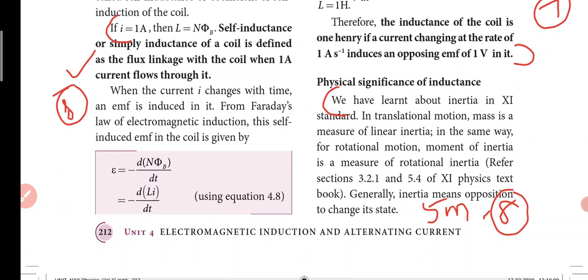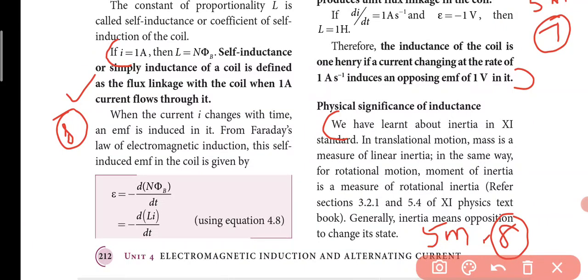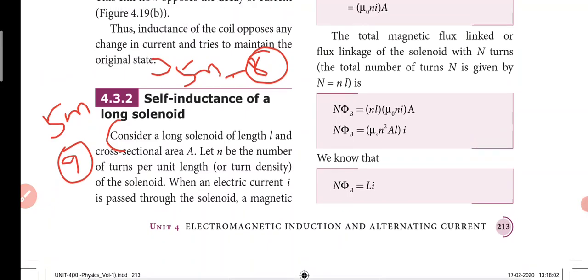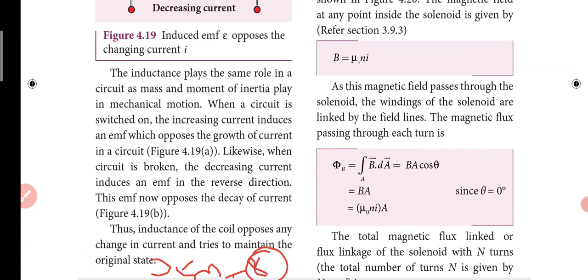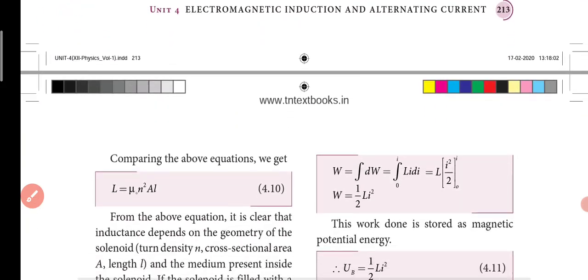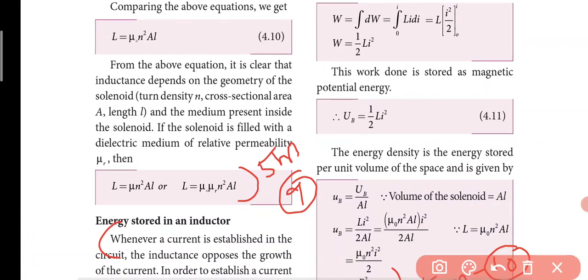Physical significance of inductance is the 8th question. What do you understand by self-inductance and its physical significance? First diagram, then equation. The equation is magnetic flux passing through each turn is the same. Then the direct equation, 3 marks. For 5 mark add more theory. That's the 9th question.